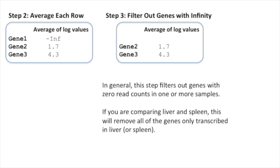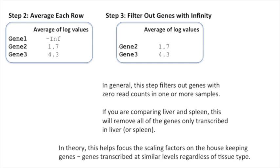If you are comparing liver and spleen, this will remove all of the genes only transcribed in liver or spleen. In theory, this helps focus the scaling factors on the housekeeping genes, genes transcribed at similar levels regardless of tissue type.